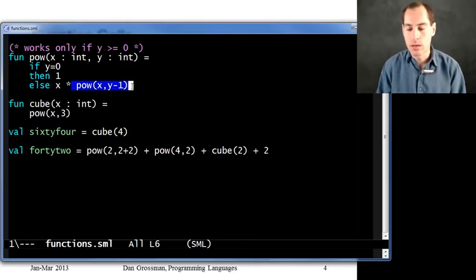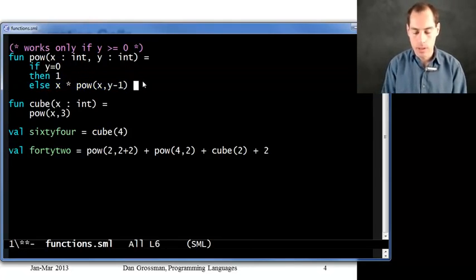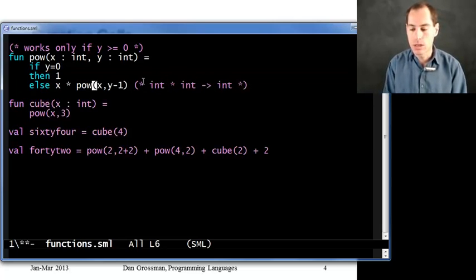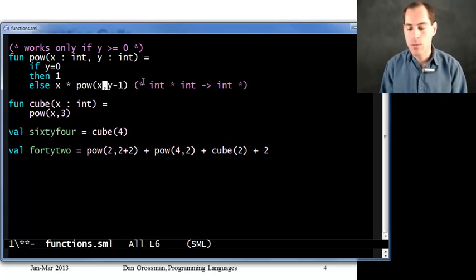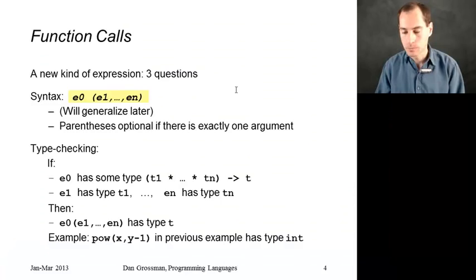Let's see why here. Because we have this call, we look up pow, and pow itself has type int star int arrow int. So fortunately, we're calling it with two arguments. When we type check x, we look it up in the static environment, which here in the function body has type int. Then we have to type check y minus 1, which will have type int because we can look up y and then subtraction takes 2 ints. So the call type checks. And then the result will have type int, because that is the result type of the function we're calling.